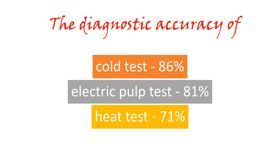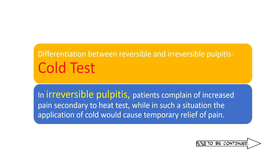Regarding diagnostic accuracy: cold test has the highest accuracy at 86%, followed by EPT at 81%, and heat test at 71%. It is recommended to combine two tests for a definitive conclusion — cold test and EPT are the best combination. To differentiate between reversible and irreversible pulpitis, the cold test is best: in irreversible pulpitis, the patient's chief complaint is pain on heat, and applying cold to that tooth typically gives temporary relief of pain.